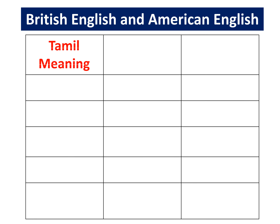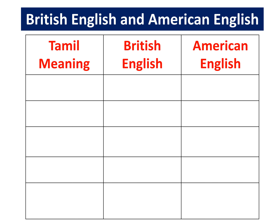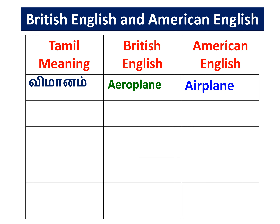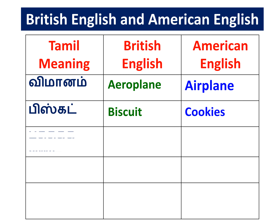Let's see some British English and American English words. First one is Aeroplane — that is British English. American English is Airplane. Next word is Biscuit — British English is Biscuit.